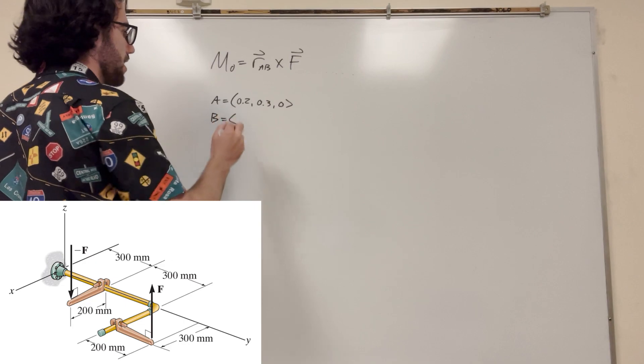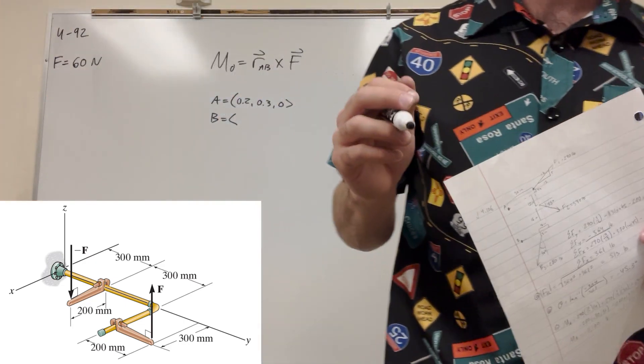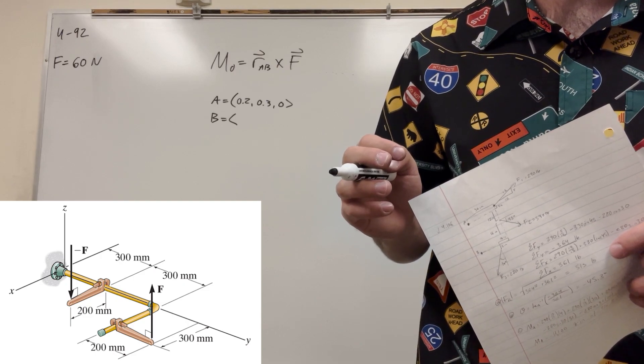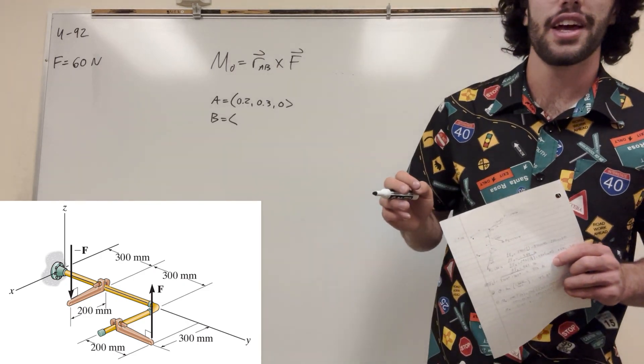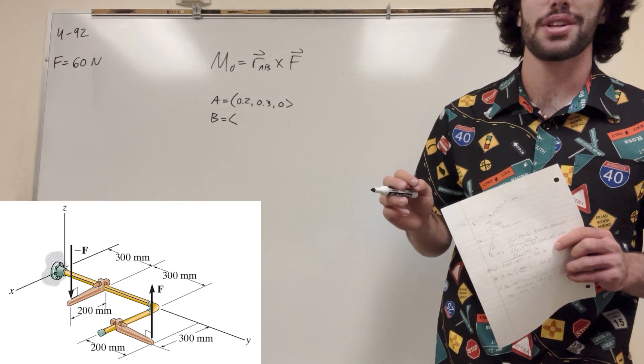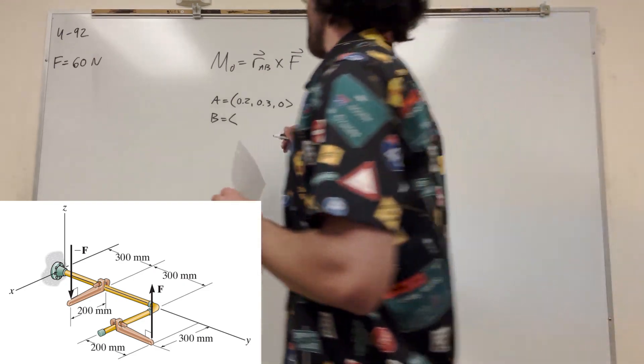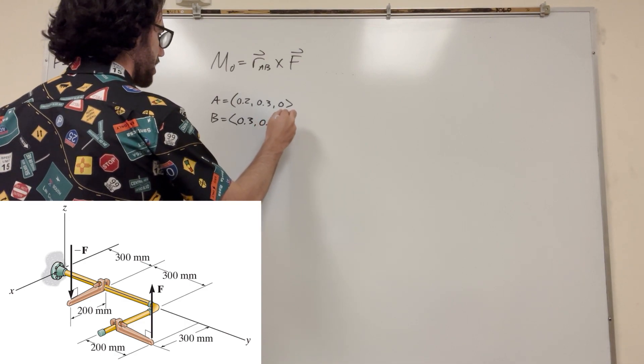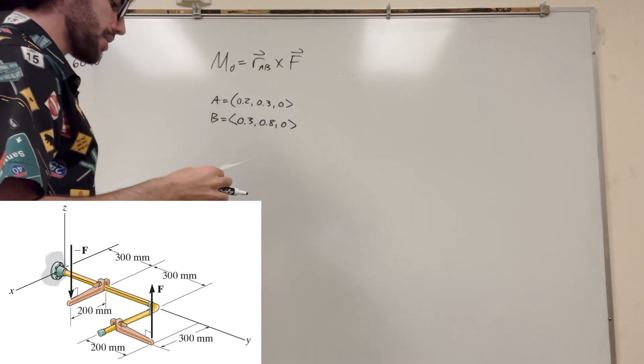So then B, let's see what's B. B looks like it goes 300 in the X direction, and then 200 plus 300 plus 300, so 0.3, 0.8. Then it doesn't go at all in the Z either. So this makes sense.